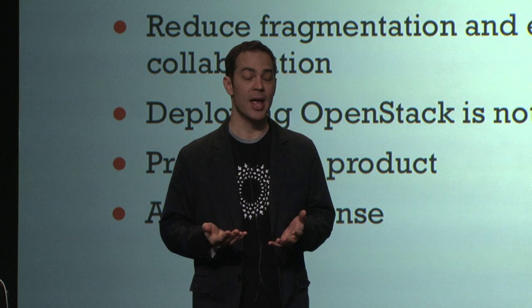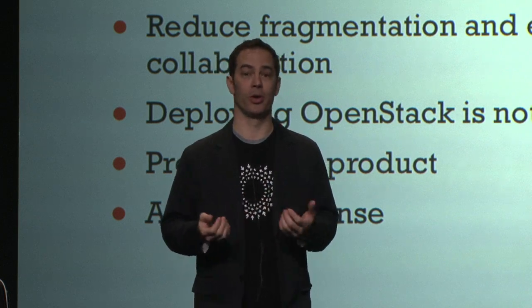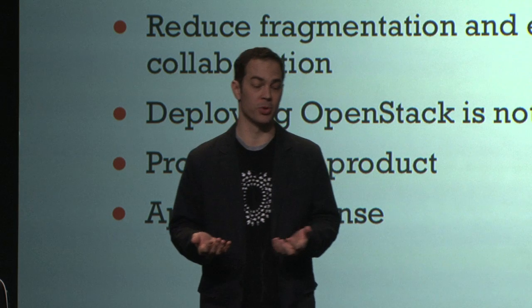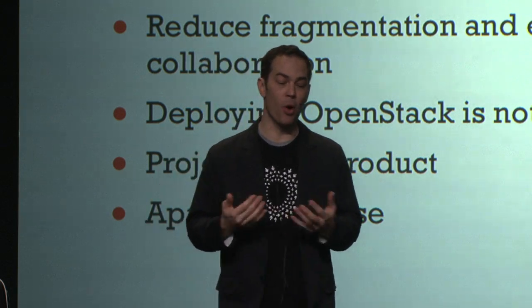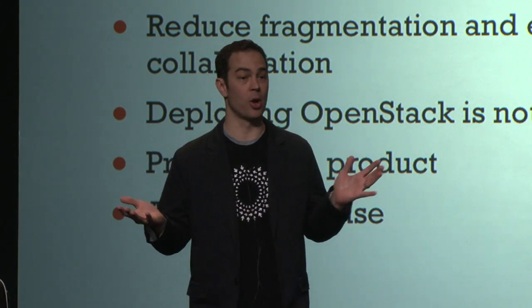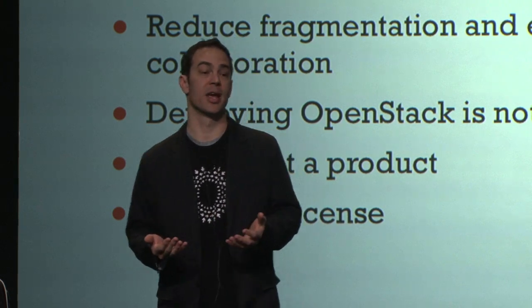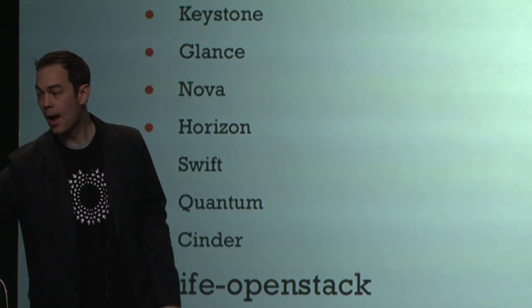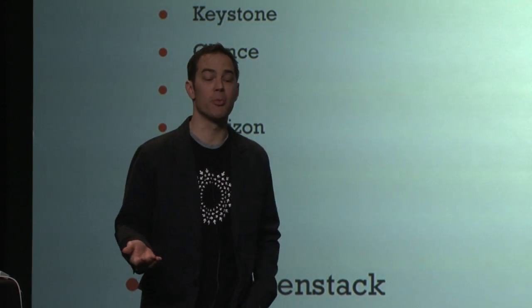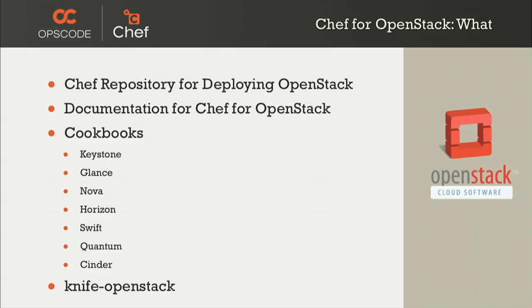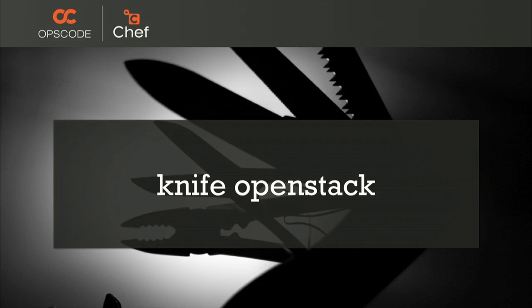What should be your differentiator is something like fanatical support, or your long-lasting engagement with your customers. We have a project around it — it's not something that OpsCode sells; we're not an OpenStack vendor. It's a Chef repository for deploying OpenStack: documentation, cookbooks for the seven major components, and Knife OpenStack.